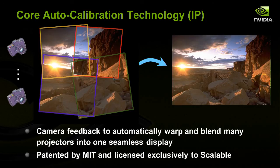In just a few seconds, a seamless edge-blended display has been generated. The great thing is you can run any application on the Windows 7 desktop, and it sees the whole desktop as one virtual display. You can quickly disengage and re-engage without rerunning the calibration sequence — it stores and reloads it. You only need to rerun calibration if the projectors move.